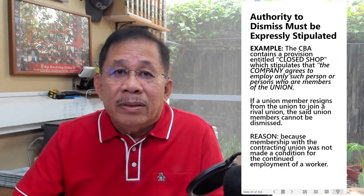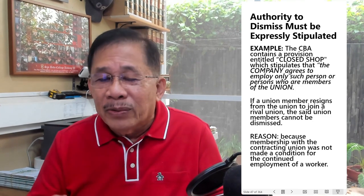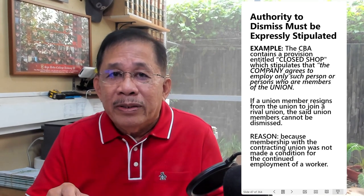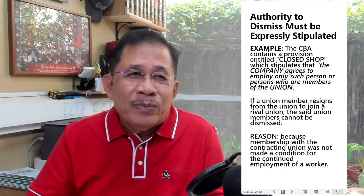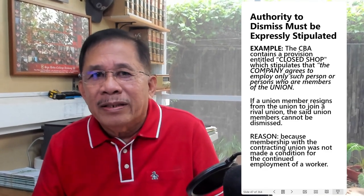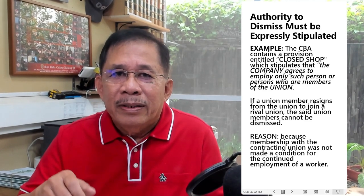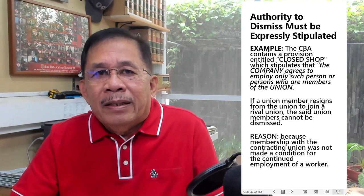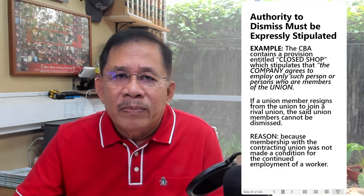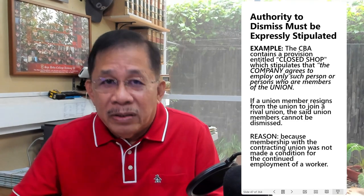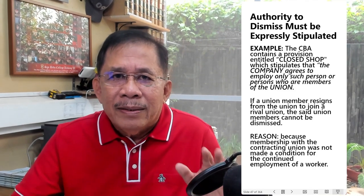Why? Because membership with the contracting union was not made a condition for continued employment. The CBA provision merely required workers hired by the company to be members of the union at the time of hiring — there was no condition that they must maintain their membership in good standing as a condition for continued employment. That tail was missing from the CBA. Since the CBA provision did not provide that employees must continue to remain members in good standing to keep their jobs, the CBA did not establish a closed shop, and the company was not obligated to dismiss the workers who resigned from the contracting union.